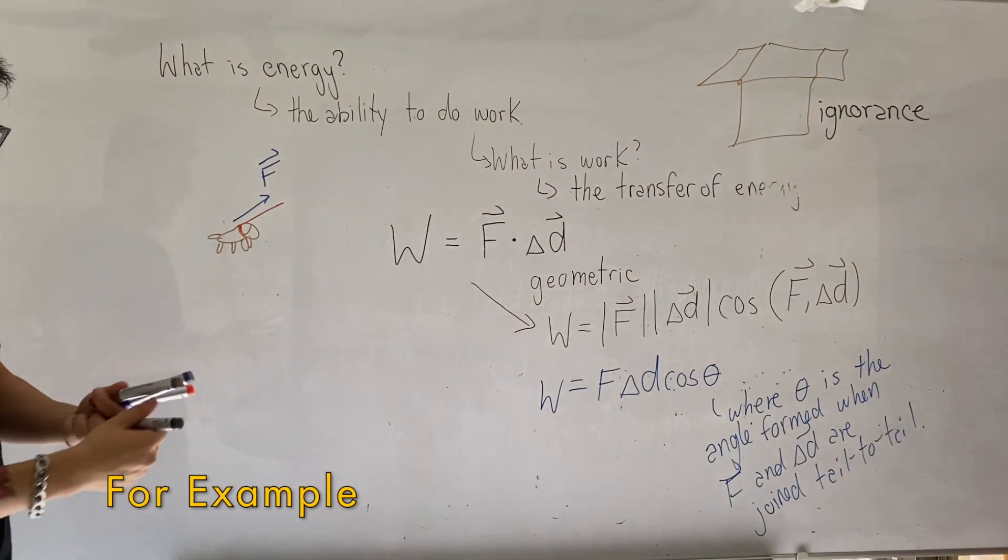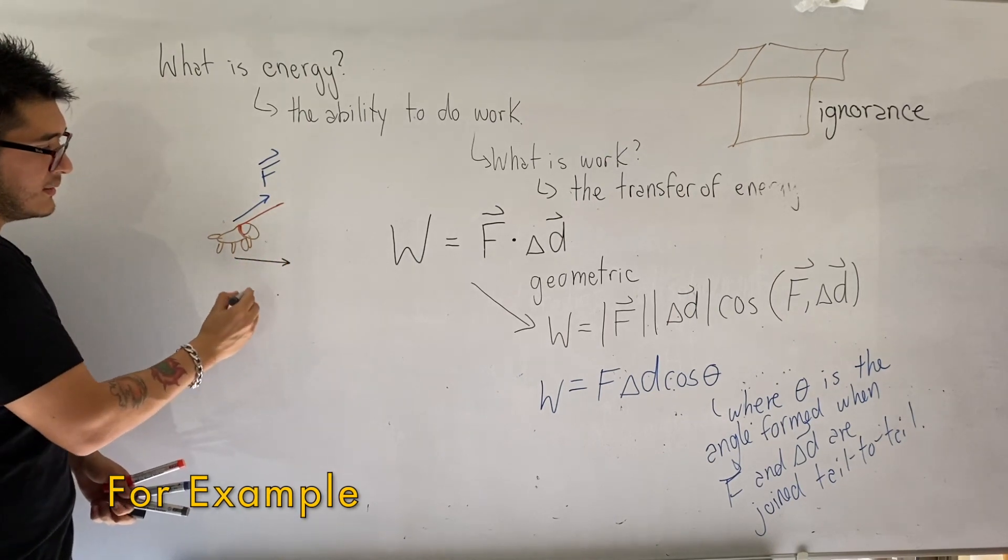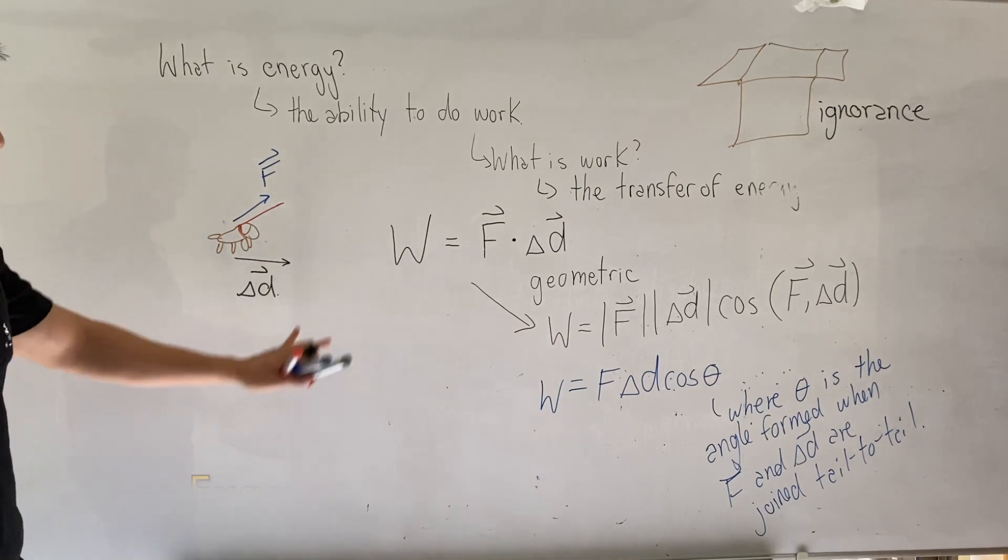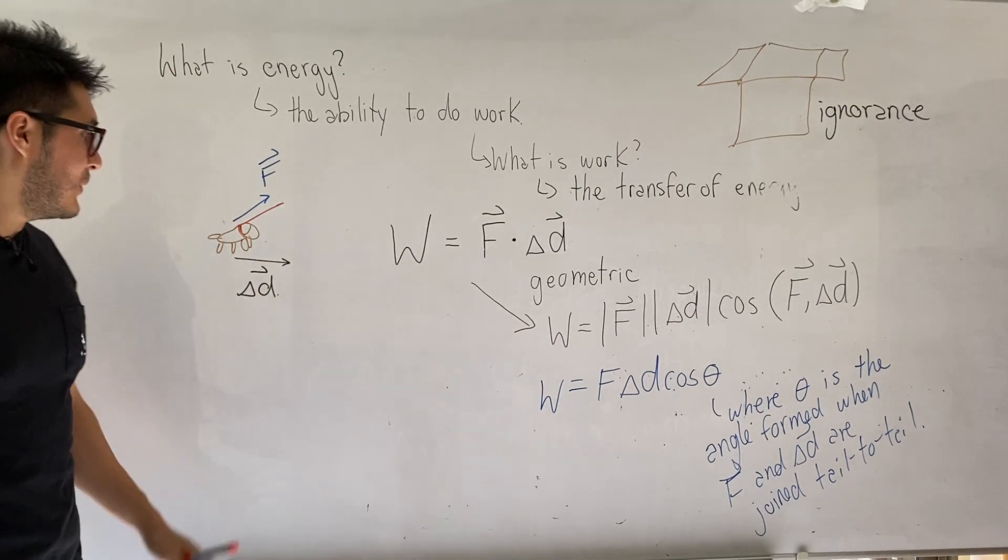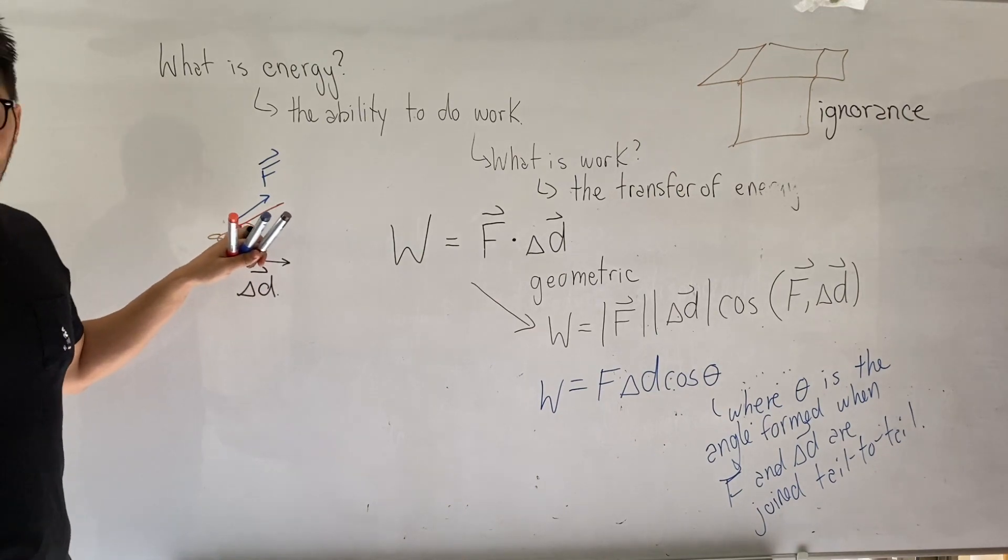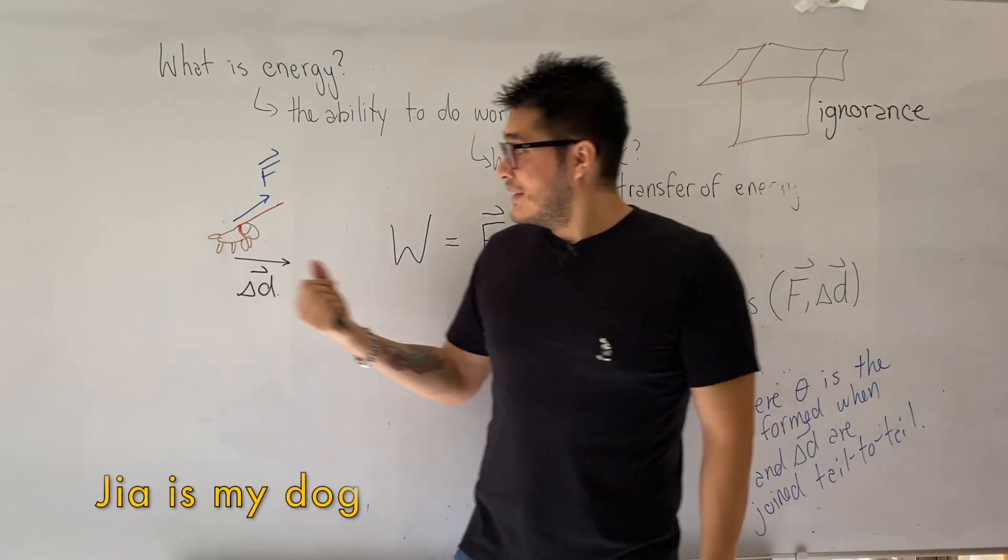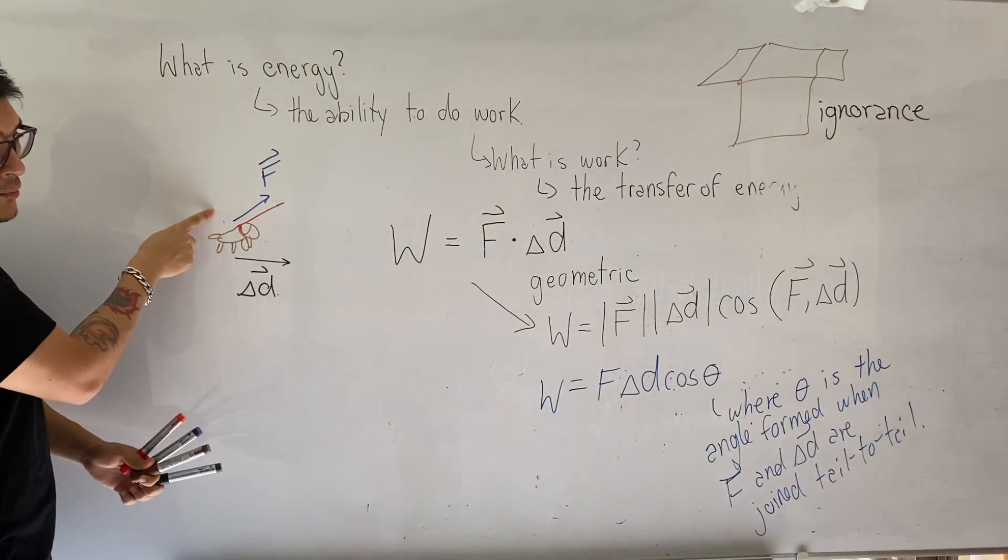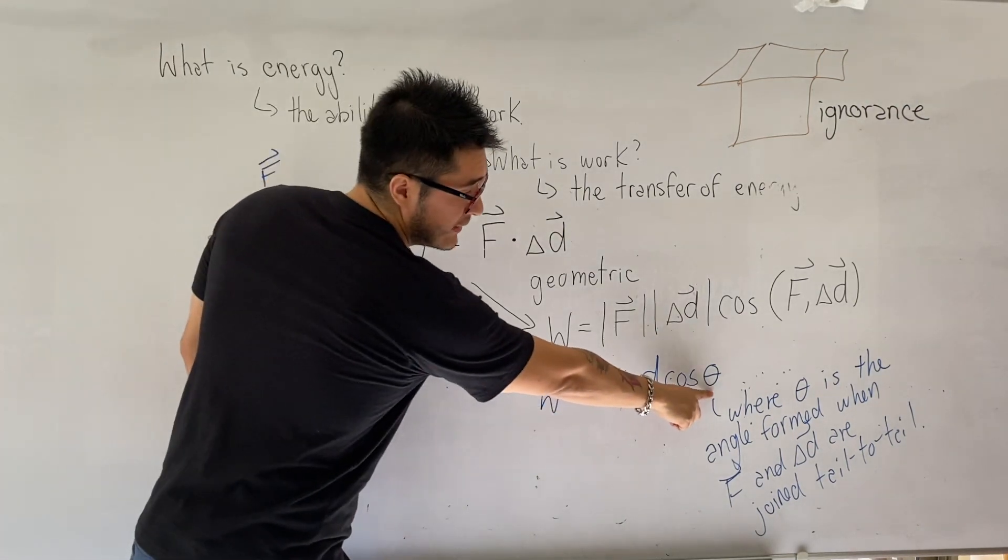Your displacement, since you're trying to pull the doggie to the right, your displacement is to the right. If we want to calculate how much work you're doing trying to pull your doggie to follow you and walk with you, because let's say it didn't want to follow you, it just wanted to be lazy, so you're trying to pull your doggie. My doggie's name is Gia, so you're trying to pull Gia along. To measure the work done, you need to connect these two vectors tail to tail because you want to find the angle theta.